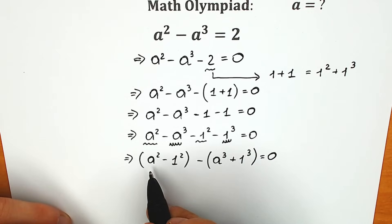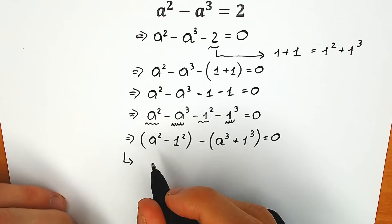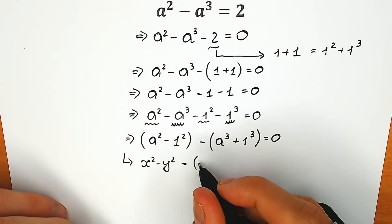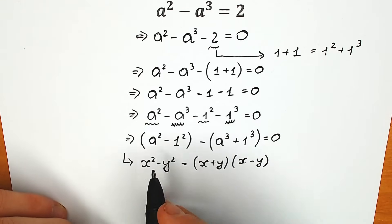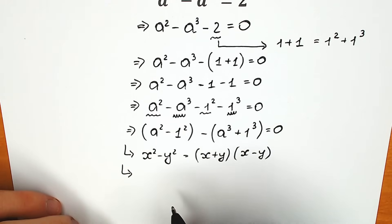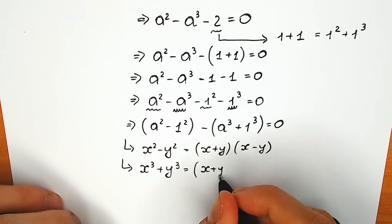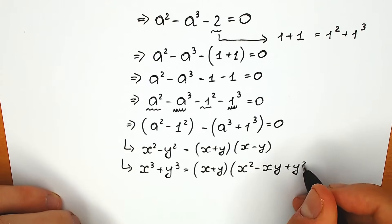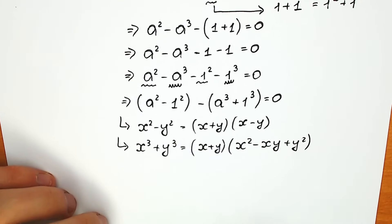Now let's look closely at what we have. In the first parenthesis we have a difference of squares — this is a basic school identity. When you have x squared minus y squared, we can write it as (x plus y) times (x minus y). In the second part we have a sum of two cubes — a slightly harder formula. x cubed plus y cubed equals (x plus y) times (x squared minus xy plus y squared).